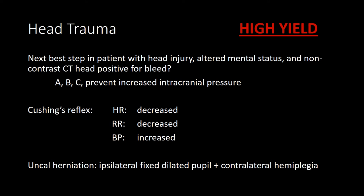In a patient with a head injury, altered mental status, and a non-contrast CT positive for a bleed, assess airway, breathing, and circulation and prevent increased intracranial pressure. Protect the airway and avoid hypotension. To manage increased ICP: elevate the head of the bed to 30 degrees, add mannitol and/or hypertonic saline. If hyperventilating, target PCO2 of 30 to 35. Treat seizures aggressively with anti-epileptics, but there is no prophylactic anti-epileptic indication.